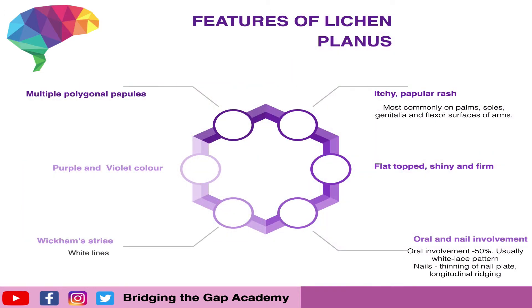Lichen planus normally presents acutely and is commonly found on the flexor surfaces, for example the wrists, the forearms, and on the legs. It presents with polygonal papules which are often purple and violet in color. There can be Wickham striae, which is basically little white lines with an almost lacy look to them. The papules themselves are normally flat, firm to touch, and shiny.